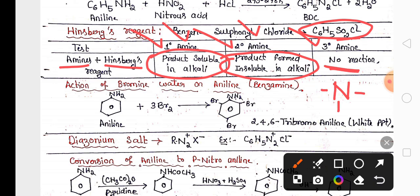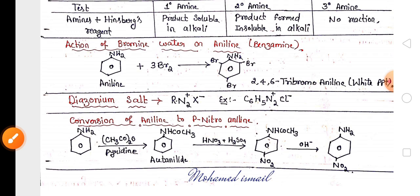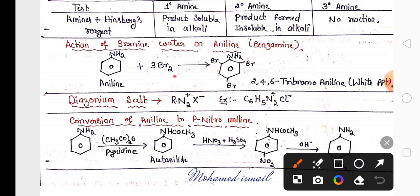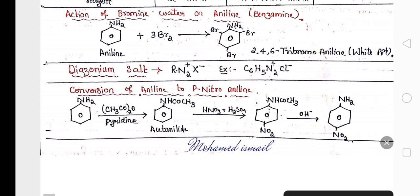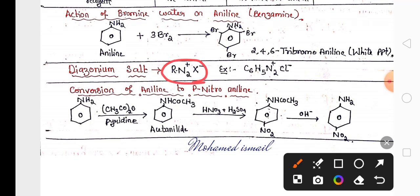Action of bromine water on aniline gives white precipitate of 2,4,6-tribromoaniline. This is the formula of diazonium salt N2+ X-, example benzene diazonium chloride.